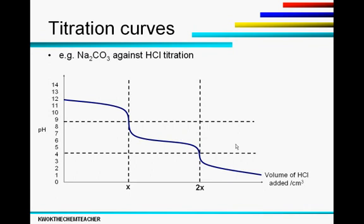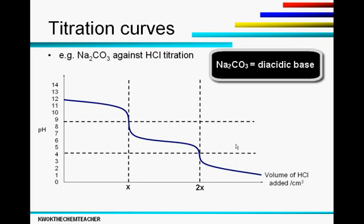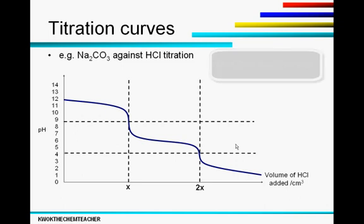The purpose of using this titration curve is to show you how different working pH of the different indicators will be reflected in the endpoint of the titration. Sodium carbonate is actually a diacidic base, and a diacidic base is a base that has two replaceable hydrogens.